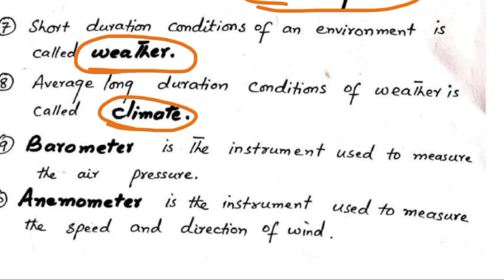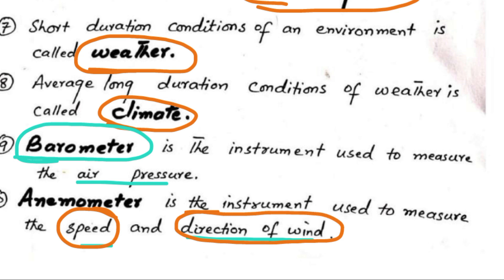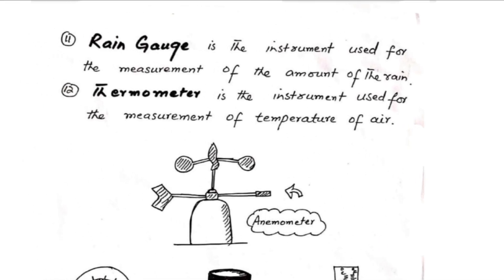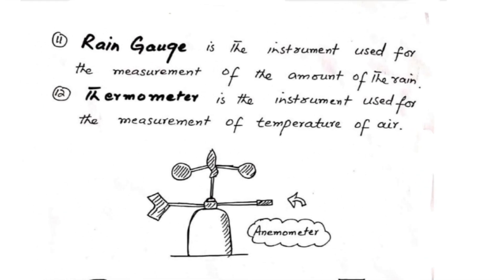Barometer is the instrument used to measure air pressure. Anemometer is the instrument used to measure the speed and direction of wind. Rain gauge is used to measure the amount of rain. Thermometer is an instrument used for the measurement of temperature.